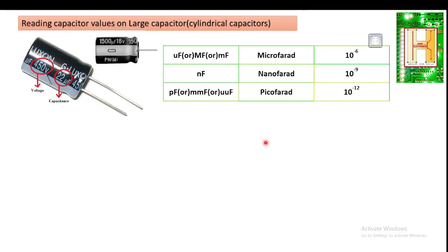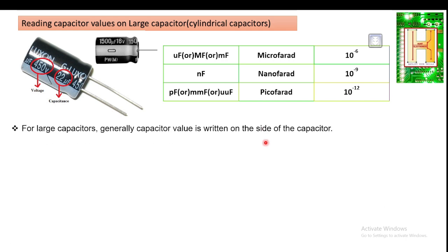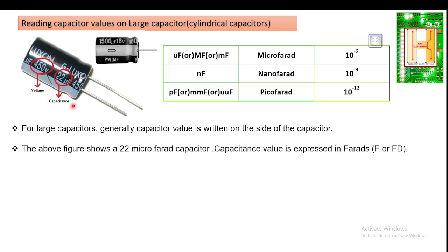The first type is a large capacitor — the electrolytic type, which we have already seen in the last technical session. Generally, when a capacitor is of large size, the value is written on the side of the capacitor. In the figure you can see one example: 450 volt and 22 microfarad. On a large capacitor, the value is always mentioned in microfarad.